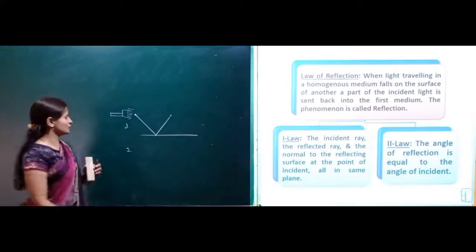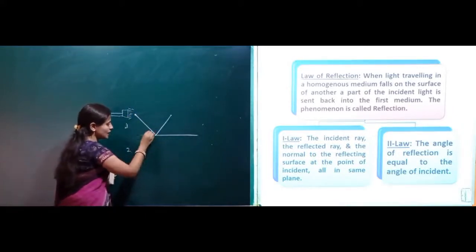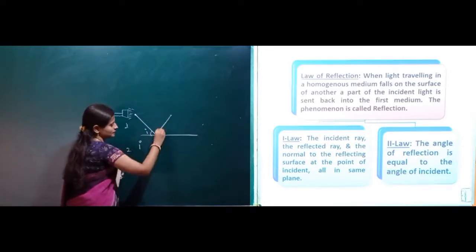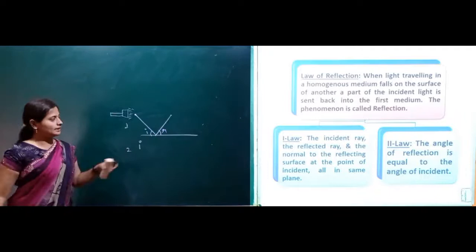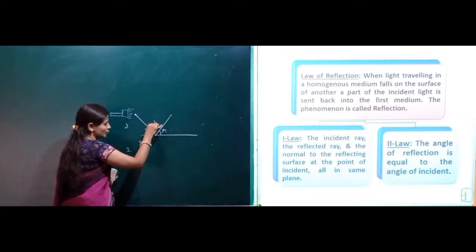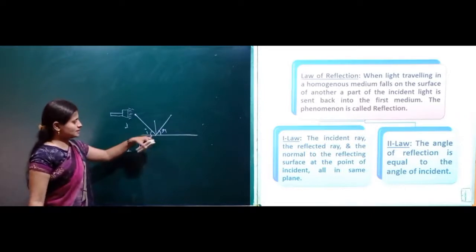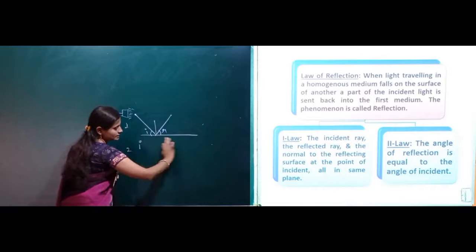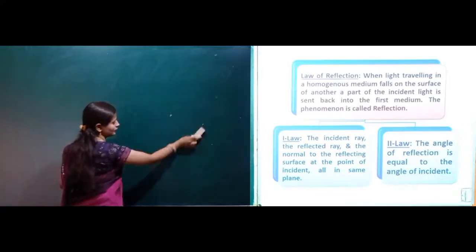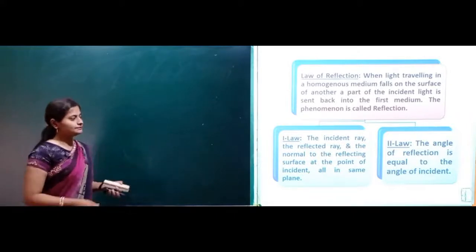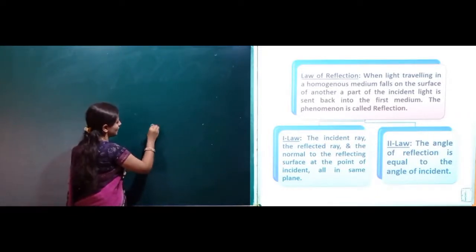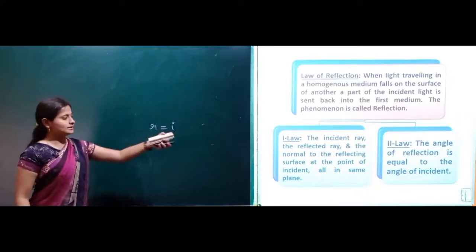The incident ray is denoted as I, and the reflected ray as R. Normal to the reflecting surface is taken at the point of incidence, and all three lie in the same plane — this is the first law of reflection. The second law of reflection states that the angle of reflection is equal to the angle of incidence, i.e., angle R equals angle I.